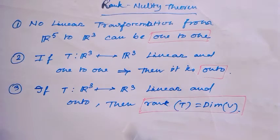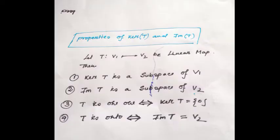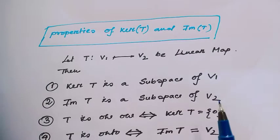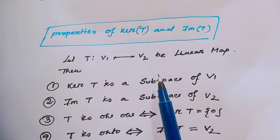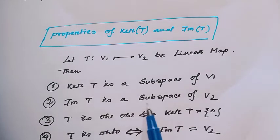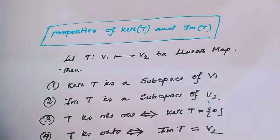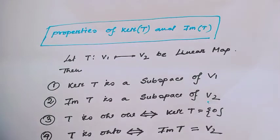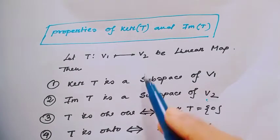By this theorem I will see such types of questions. First, let me recall from my earlier video: I had discussed kernel and image with some examples. Also, I had discussed some properties — if T is a linear transformation from V1 to V2, then the kernel is always a subspace of V1 and the image is always a subspace of V2. T is one-to-one if and only if kernel T equals {0}, and T is onto when the image equals all of V2.